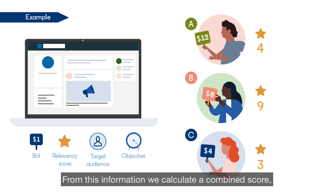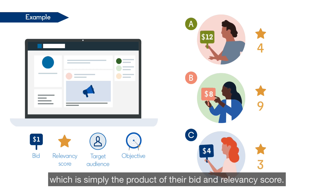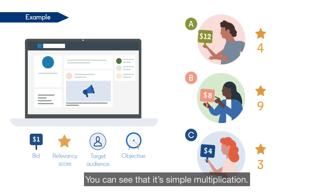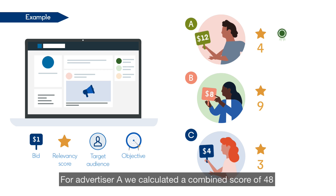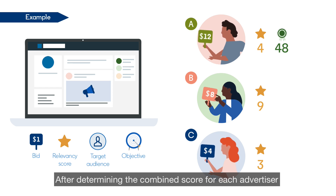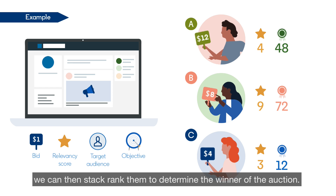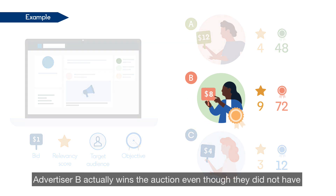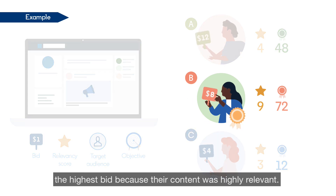From this information, we calculate a combined score, which is simply the product of their bid and relevancy score — a simple multiplication. For Advertiser A, we calculated a combined score of 48 by multiplying the bid price of $12 against the relevancy score of 4. After determining the combined score for each advertiser, we stack rank them to determine the winner of the auction. In this example, Advertiser B is the winner, even though they did not have the highest bid, because their content was highly relevant.